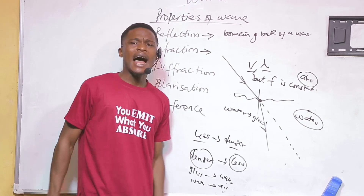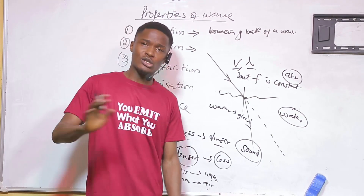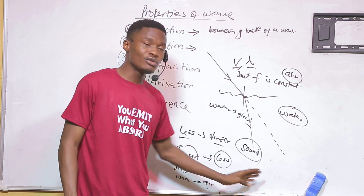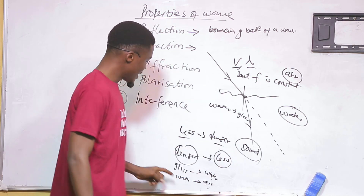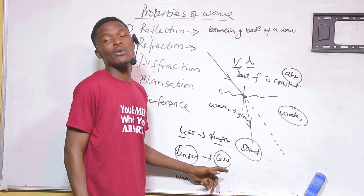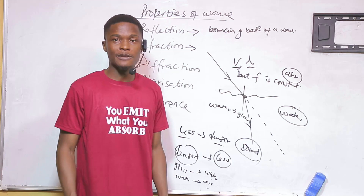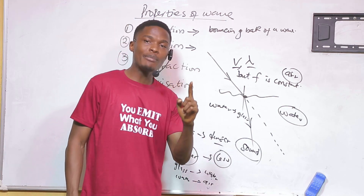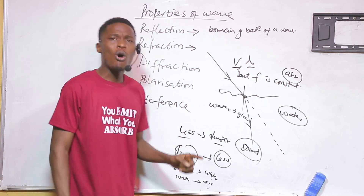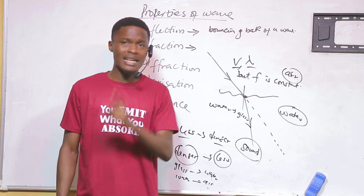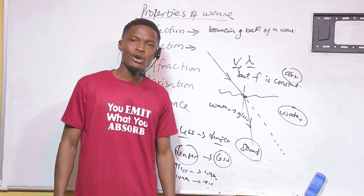These rules apply to all waves, but the exception is sound. In JAMB they may ask which wave type does not obey these rules. For sound, the rule is the opposite: if sound is going from a denser medium to a less dense medium, instead of increasing, the speed decreases. If sound goes from a less dense medium to a denser medium, the speed will increase.